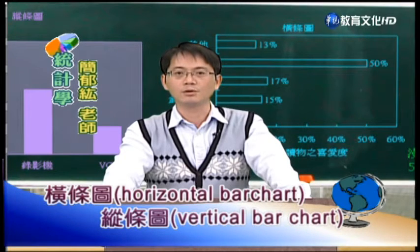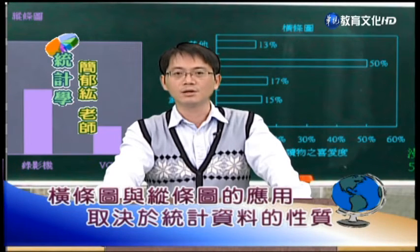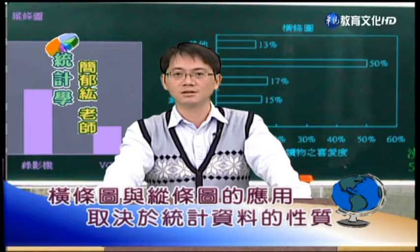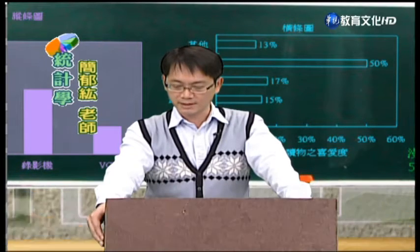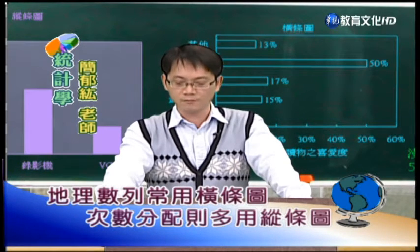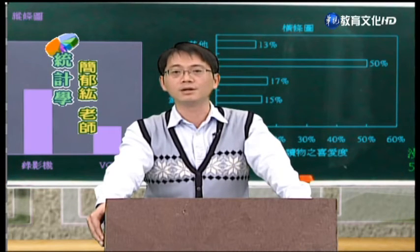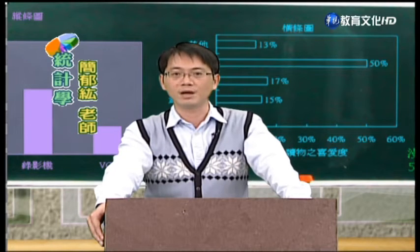這就是用表格的方法來呈現類別資料的情形。除了表格之外，另外一種就是用圖形的做法。最常用來呈現類別資料的圖形首推長條圖。長條圖可分為橫條圖跟直條圖。一般常見的地理數列資料會用橫條圖來呈現，而次數分配的多寡則喜歡用直條圖。除了這些之外，像一些線條混合圖等等都是長條圖的一些變化圖表。